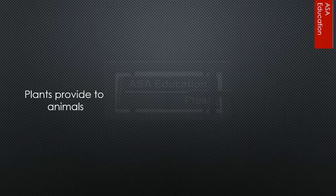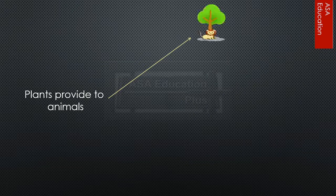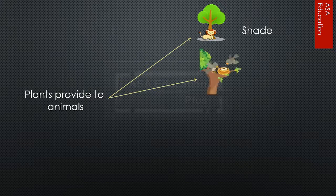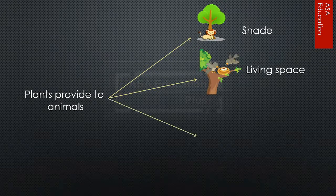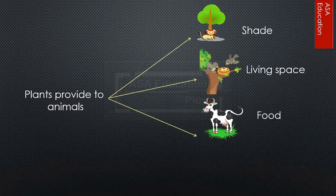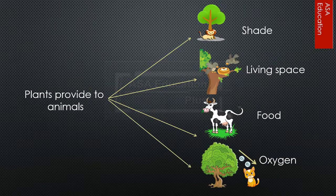Plants provide to animals: shade, living space, food, and oxygen.